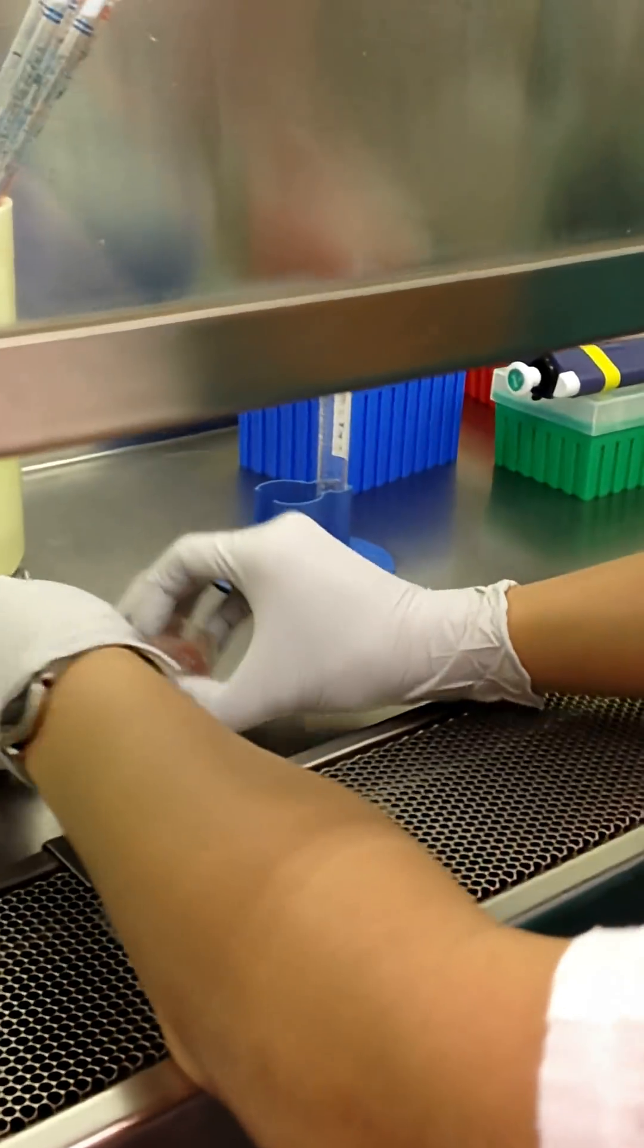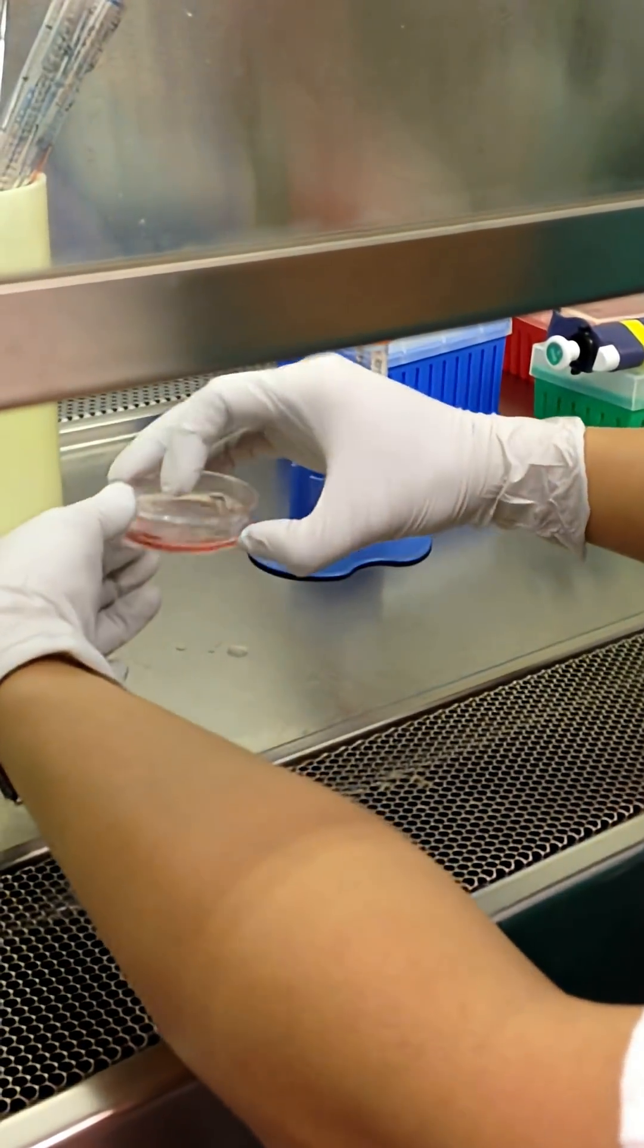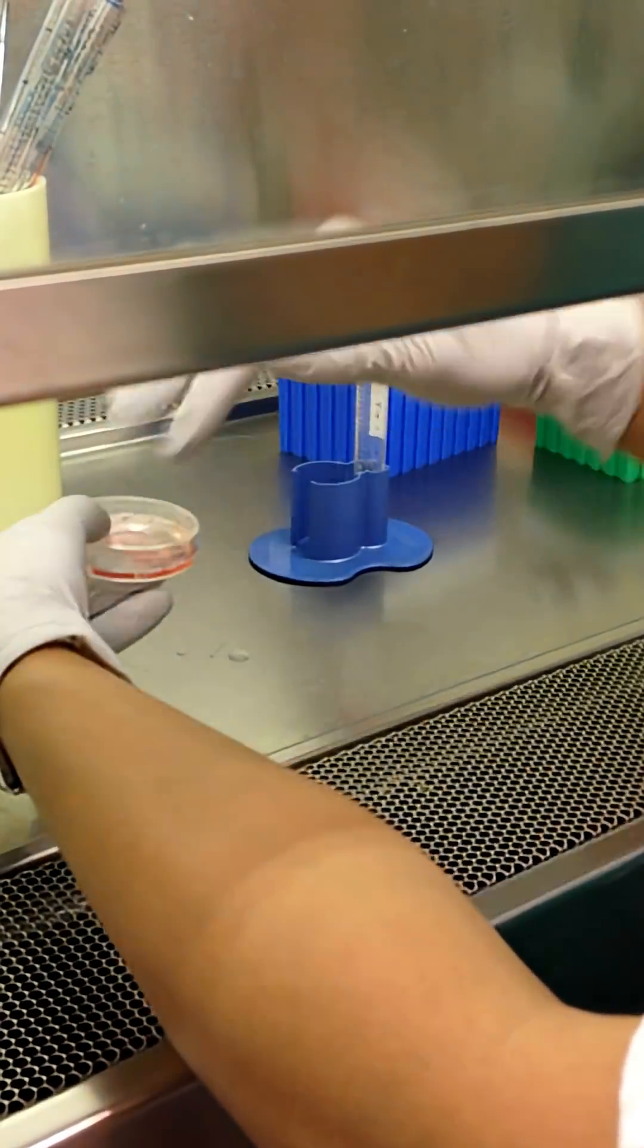Then what I do is I swirl it a few times so the plate is fully covered. This allows the cells to disperse evenly.